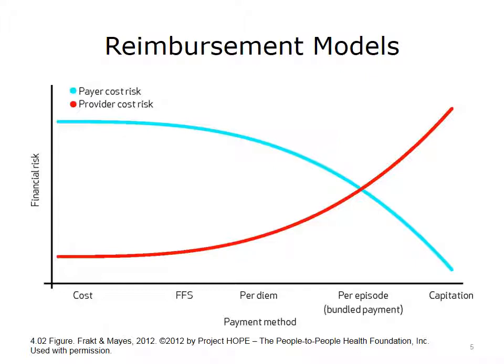As you can see, the risk for the costs of care shifts from the patient to the provider as we move to some of the alternative payment models along the X-axis. The theory is that if you are the provider and the financial risk shifts to you, then you become much more motivated to eliminate some of the waste we identified. This is, in fact, what has happened among HMOs like Kaiser Permanente.